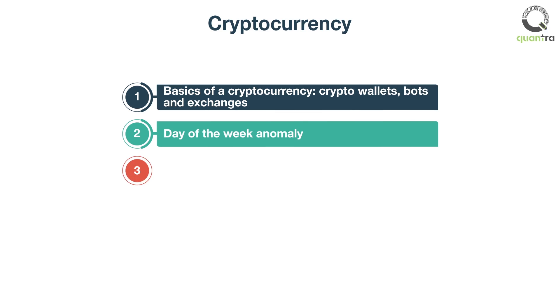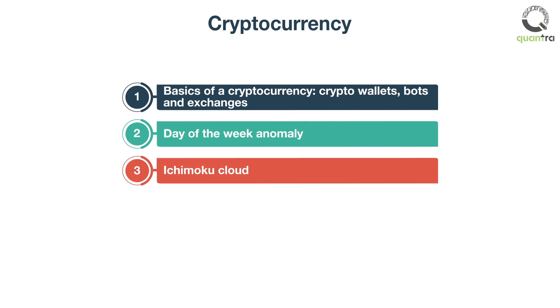In the third section, we will learn and create a trading strategy based on the Ichimoku cloud, which consists of five charts used to display support and resistance, momentum, and identify the direction of a trend.